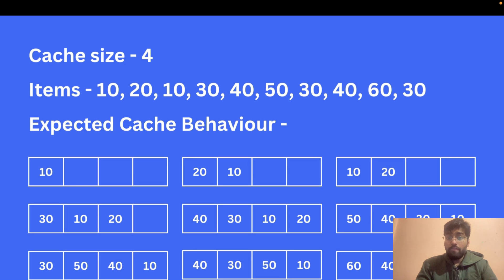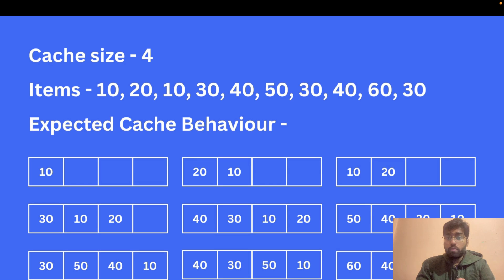When we go for the second item, 20 — 20 is also not present in the cache. If an item is present we return its index, but if it is not present we simply push it to the front because it is the recently accessed item. When we come to 10 again, we are going to pop it out from its position — index 1 — and bring it to the front. Then 30 was not there, so we push it to the front.